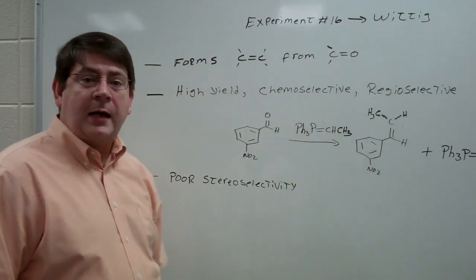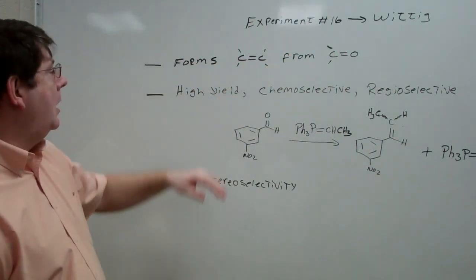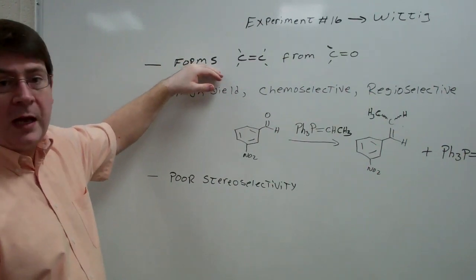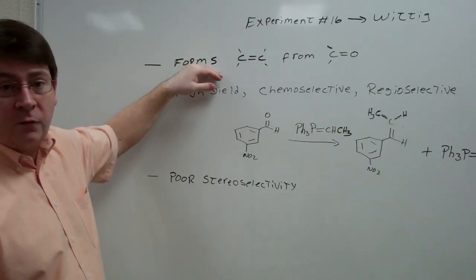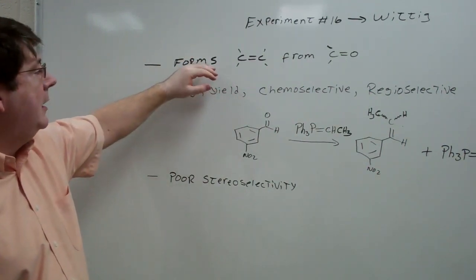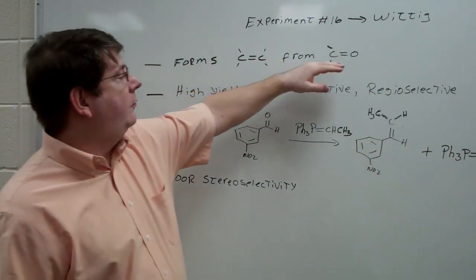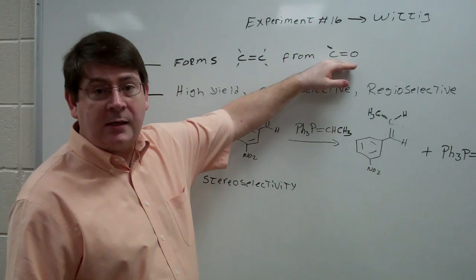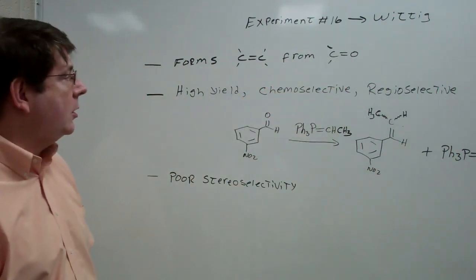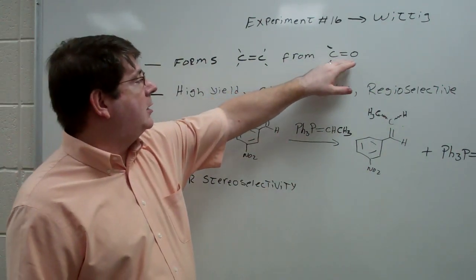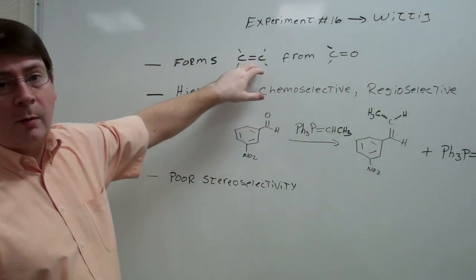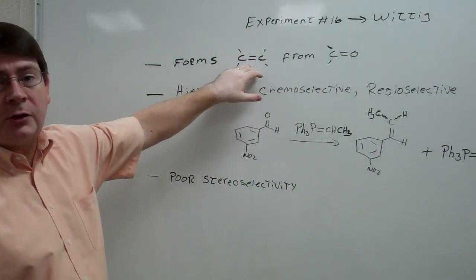This week we're going to be dealing with the Wittig reaction in experiment 15. The Wittig reaction is one of those named reactions that actually finds a lot of use to organic chemists. It allows us to form carbon-carbon double bonds from either ketones or aldehydes. In this lab we're going to be dealing with aldehydes, so it allows us to transform a carbon-oxygen double bond into a carbon-carbon double bond. So it's a very important reaction.